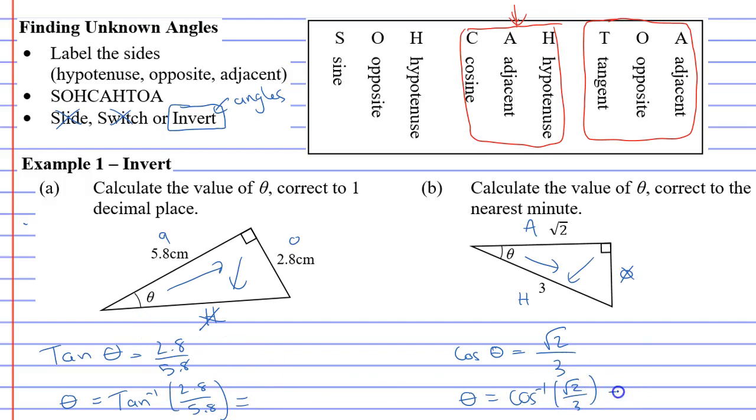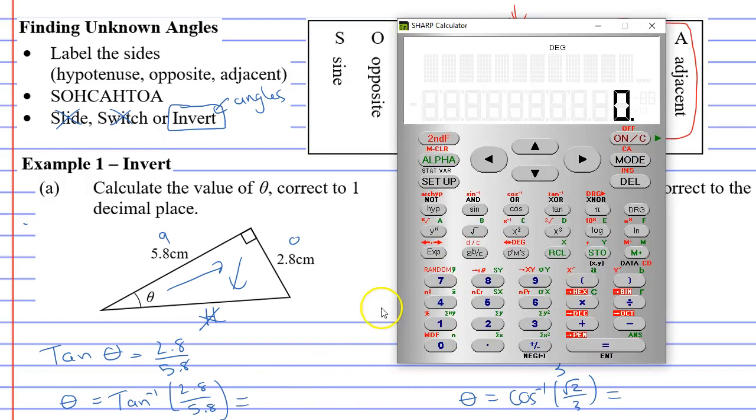Now it's not too hard to work this out, but some people find it tricky to find this tan with a negative one or this cos with a negative one. So let's bring out the calculator. And of course every calculator is different, but if you look at sin cos tan you can see the inverse above it. And on this calculator it's in red.